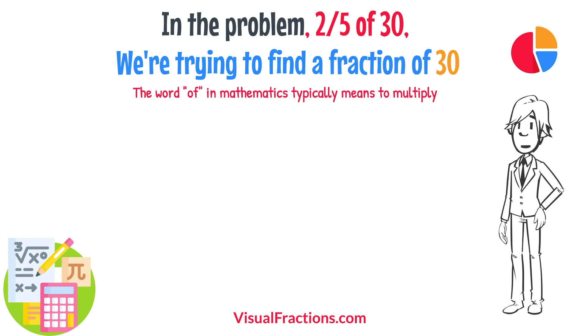The word 'of' in mathematics typically means to multiply, so we rewrite our problem as multiplication, 2 fifths times 30. To simplify the calculation, we first convert our whole number into fraction form, writing 30 as 30 over 1.